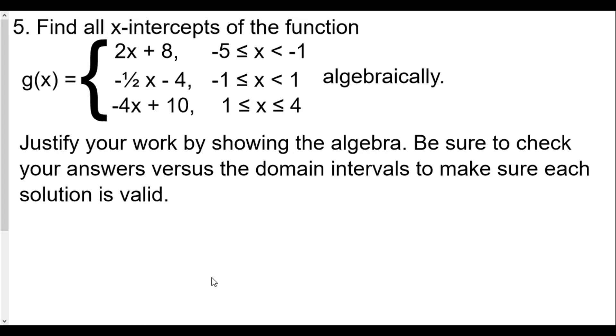Let's begin with our first one. Our first function here is going to be 2x + 8 in the interval of -5 < x < -1. So we set 2x + 8 equal to zero. Let's subtract 8 from both sides. 2x equals -8, divided by 2.